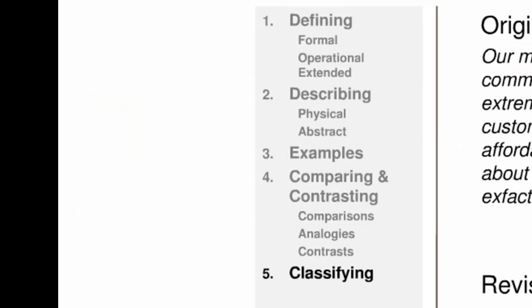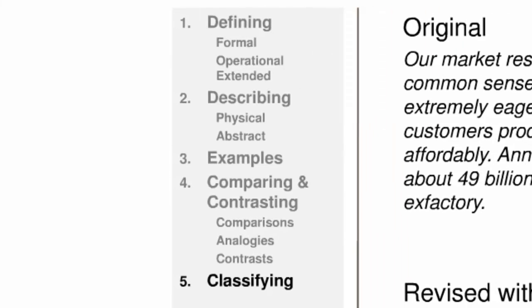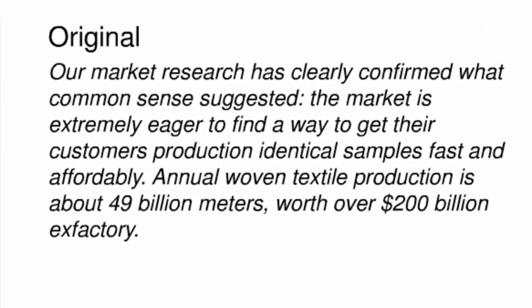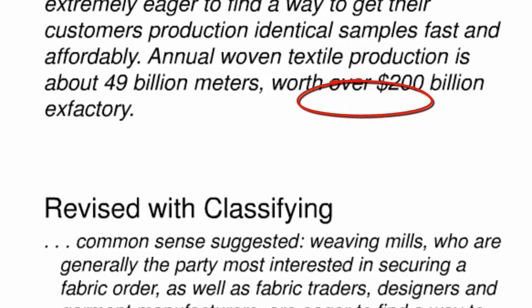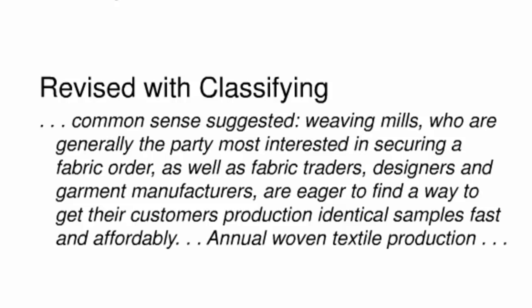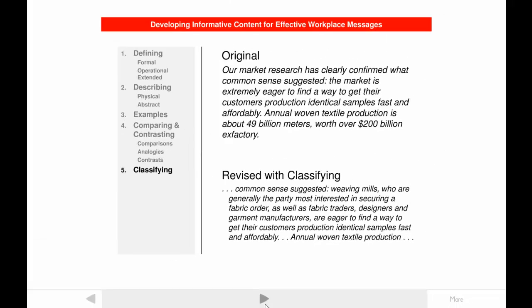Classifying is the fifth technique for developing informative content. In the revision, the market for Fabrica's product is classified into four types: weaving mills, fabric traders, designers, and garment manufacturers. A group of potential investors is now more likely to have the knowledge needed to overcome their lack of expertise about the market for Fabrica's product.